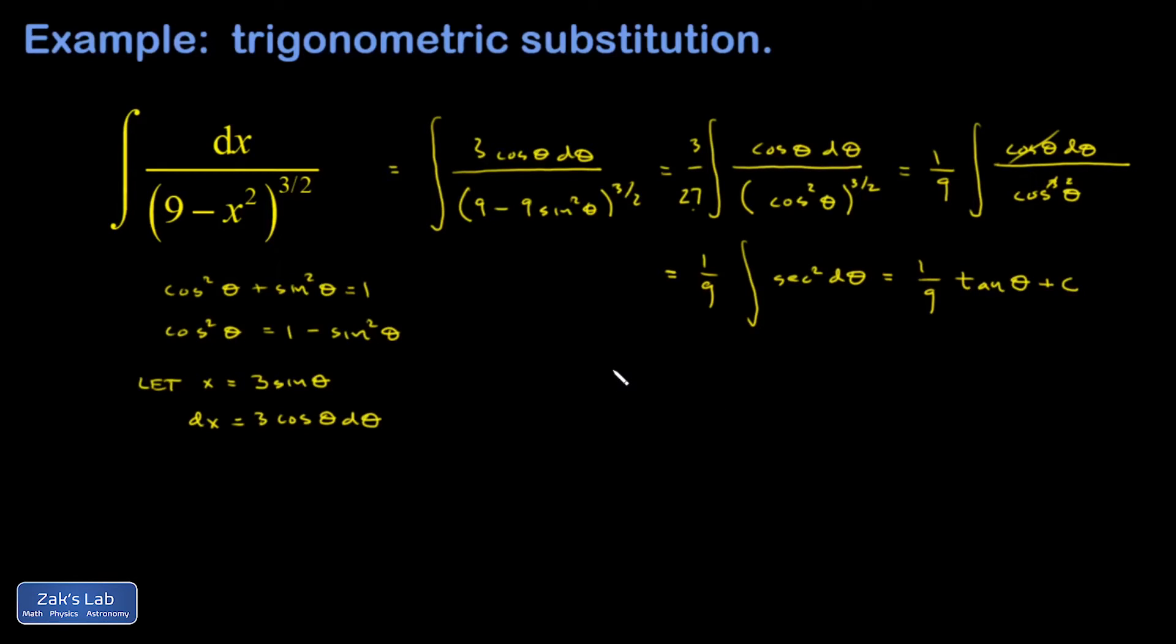And then I'm not done until I rephrase this solution in terms of the original variable x. So to get that done, I have to replace theta. I'm going to go back to my original substitution. So x over 3 is sine theta. That means theta is the angle whose sine is x over 3.